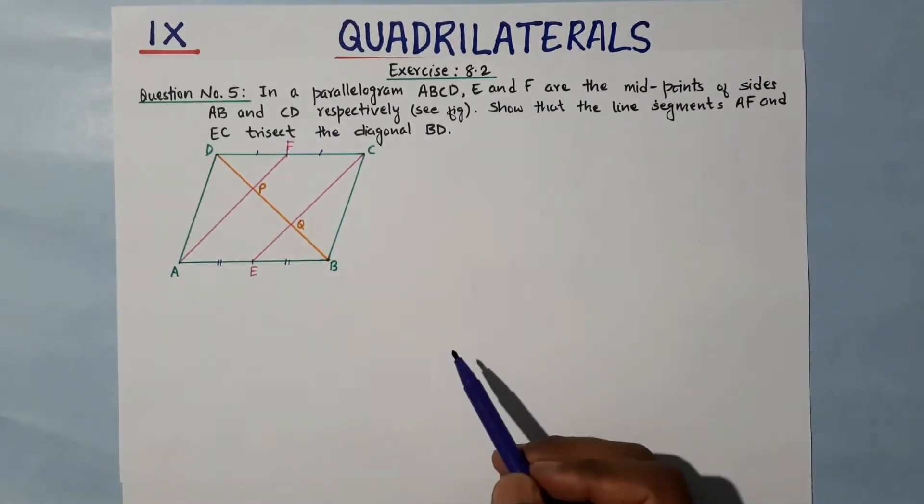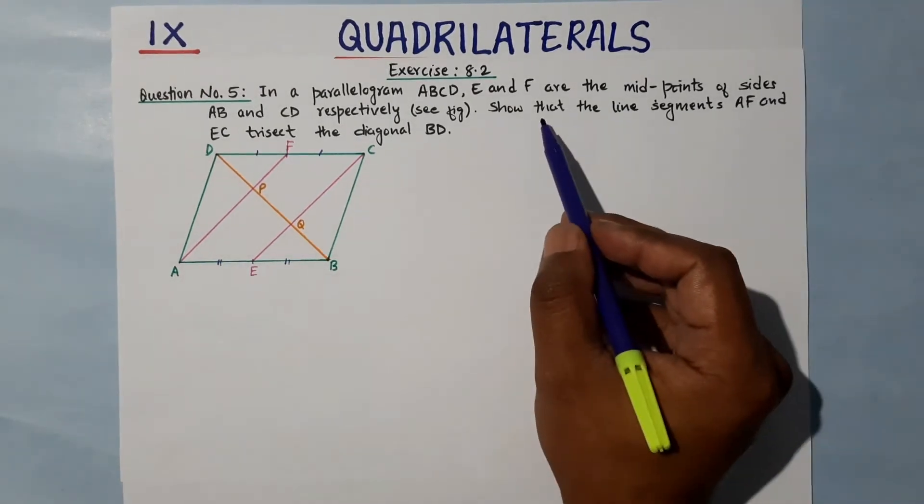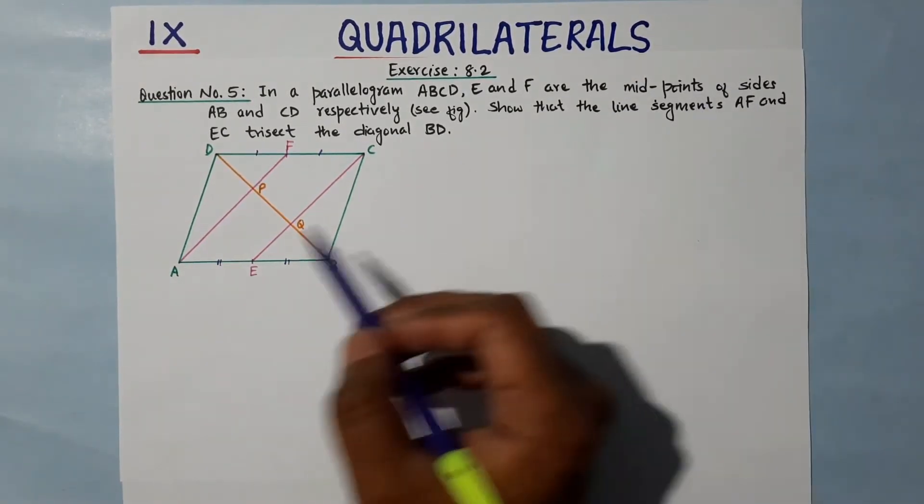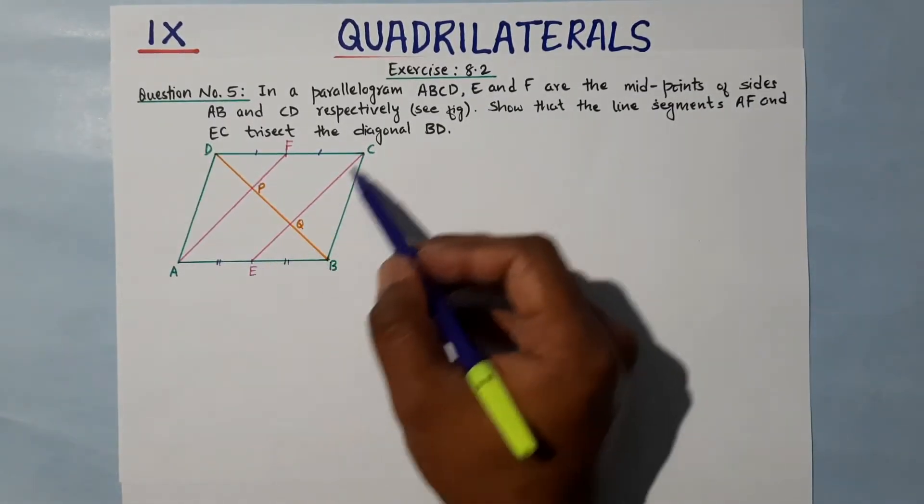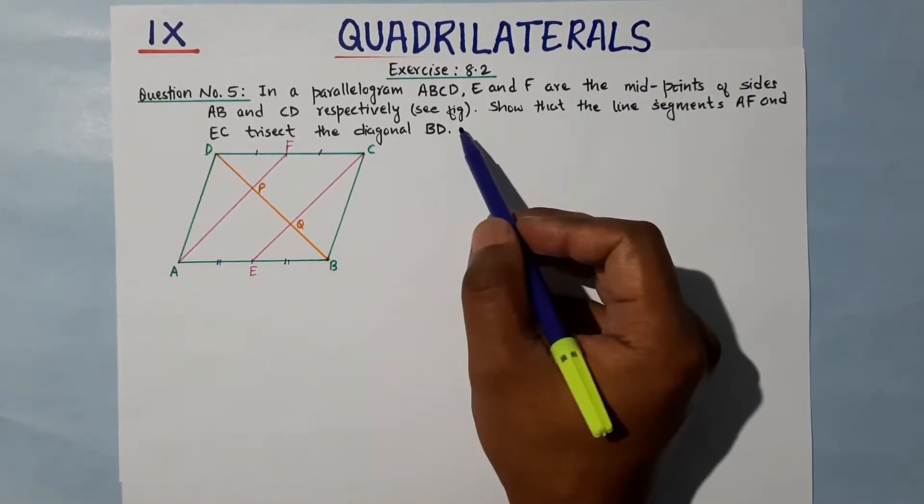Show that the line segments AF and EC trisect the diagonal BD.